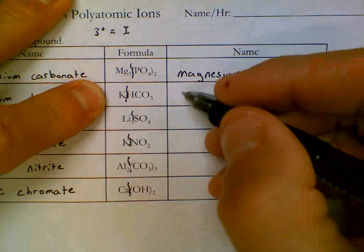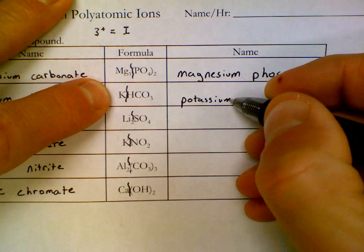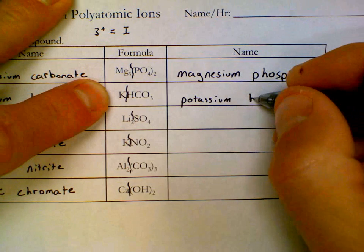K is called potassium. HCO₃ is called bicarbonate.